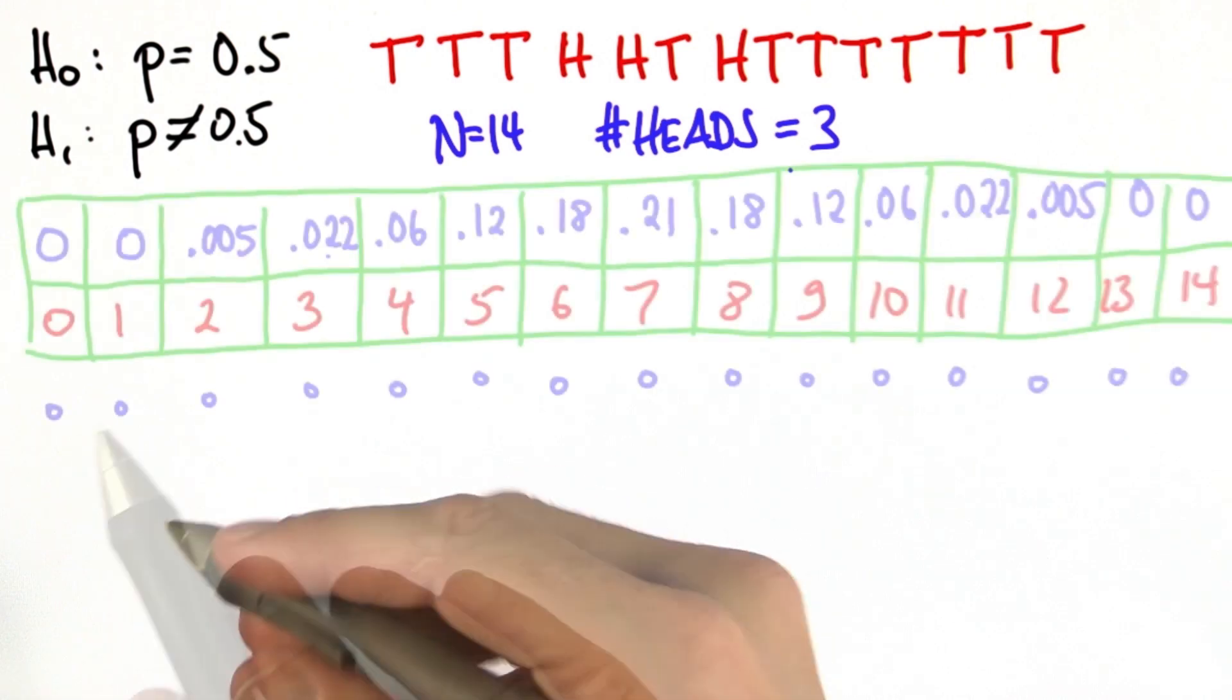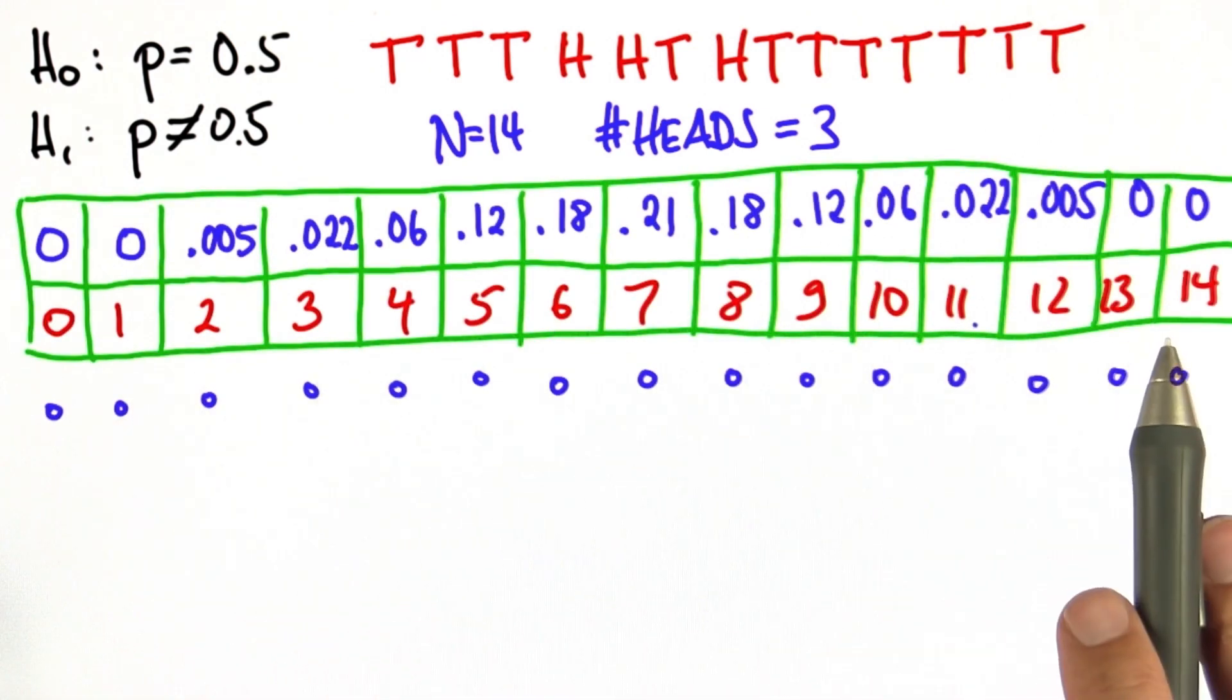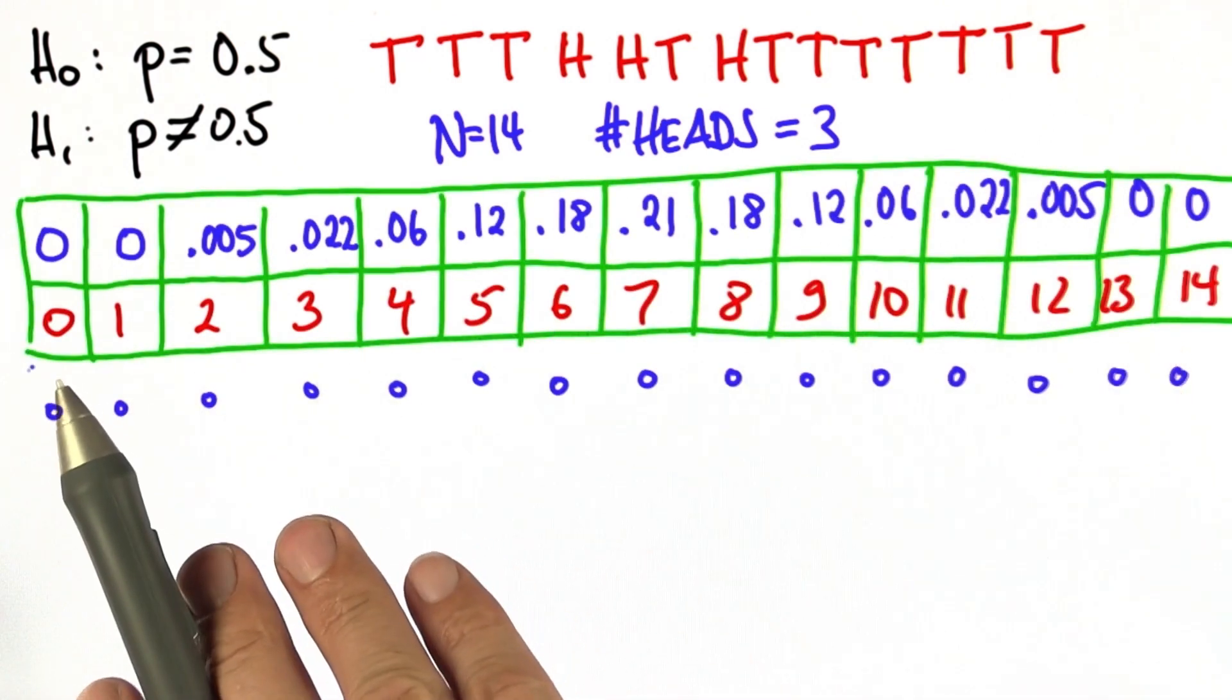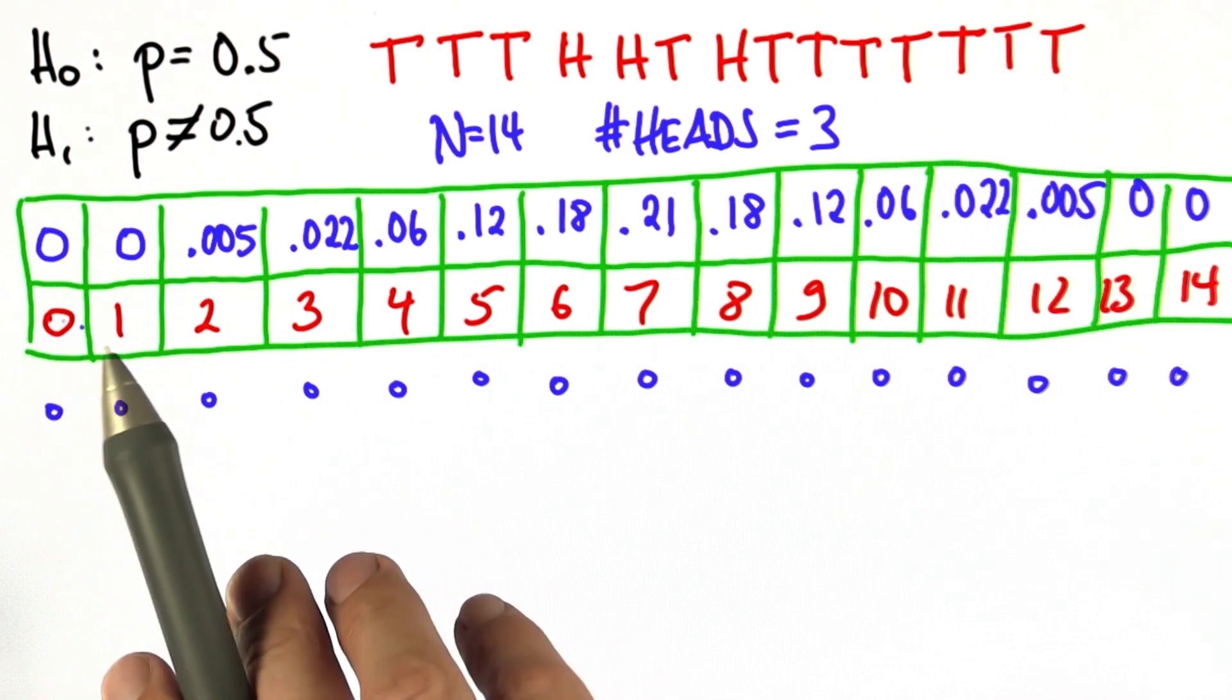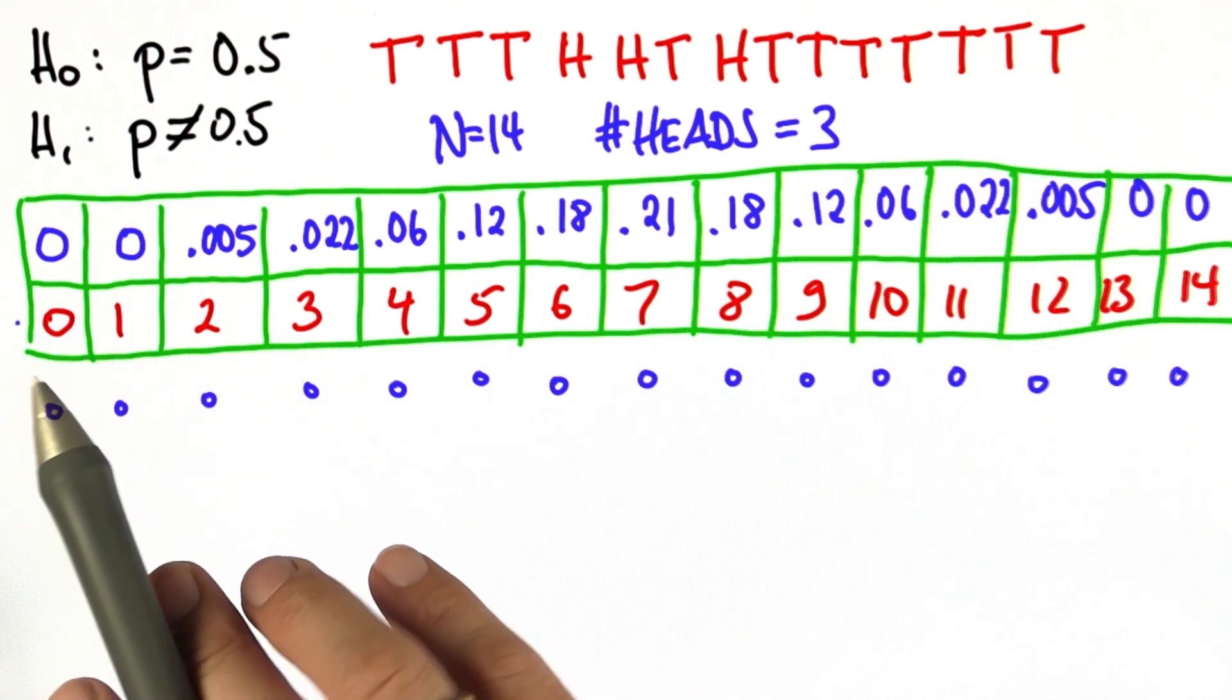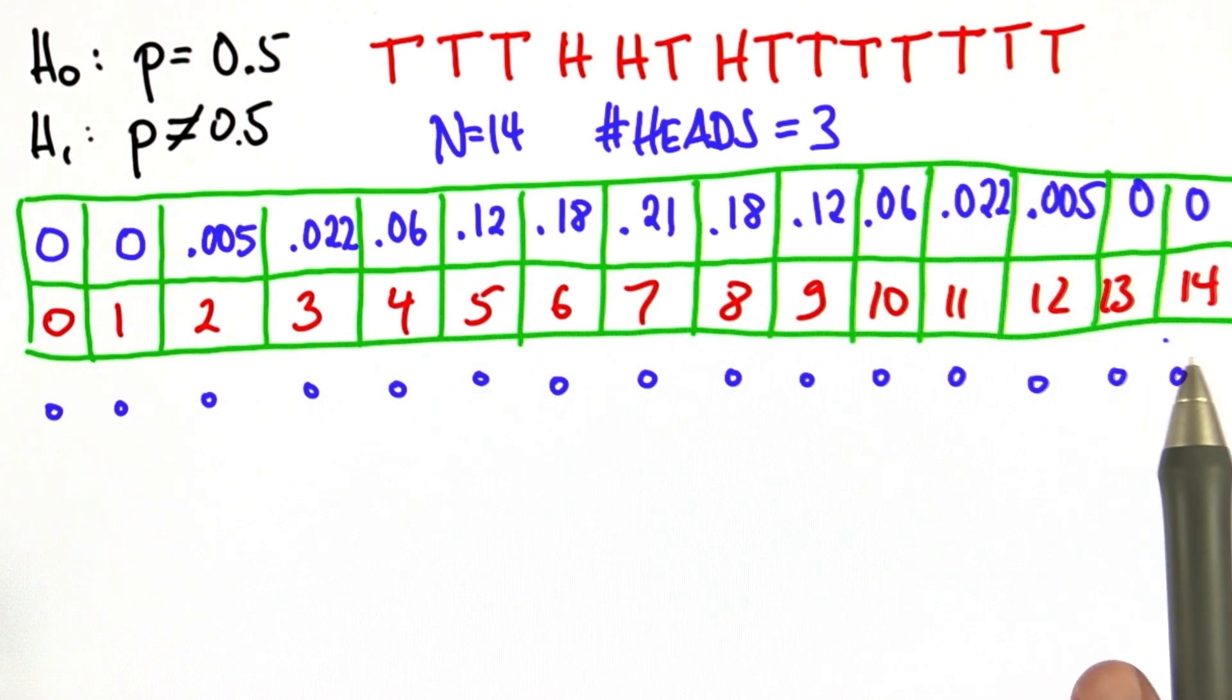Let's do the analysis. So in this table, I've graphed for you the probabilities under the binomial distribution for each possible outcome from 0 to 14, as before.